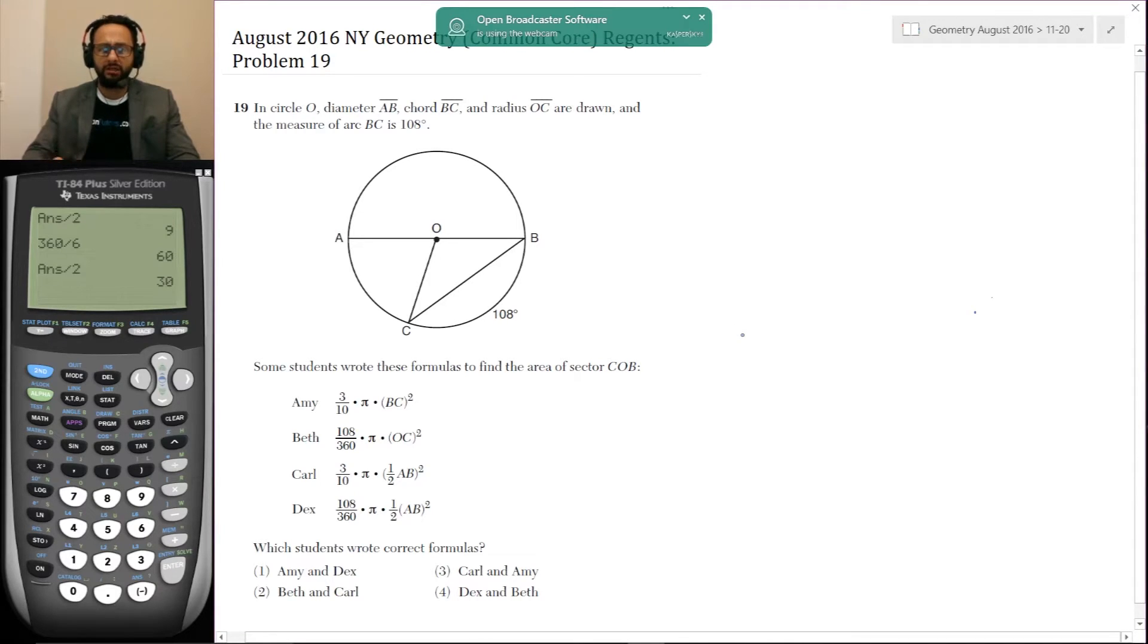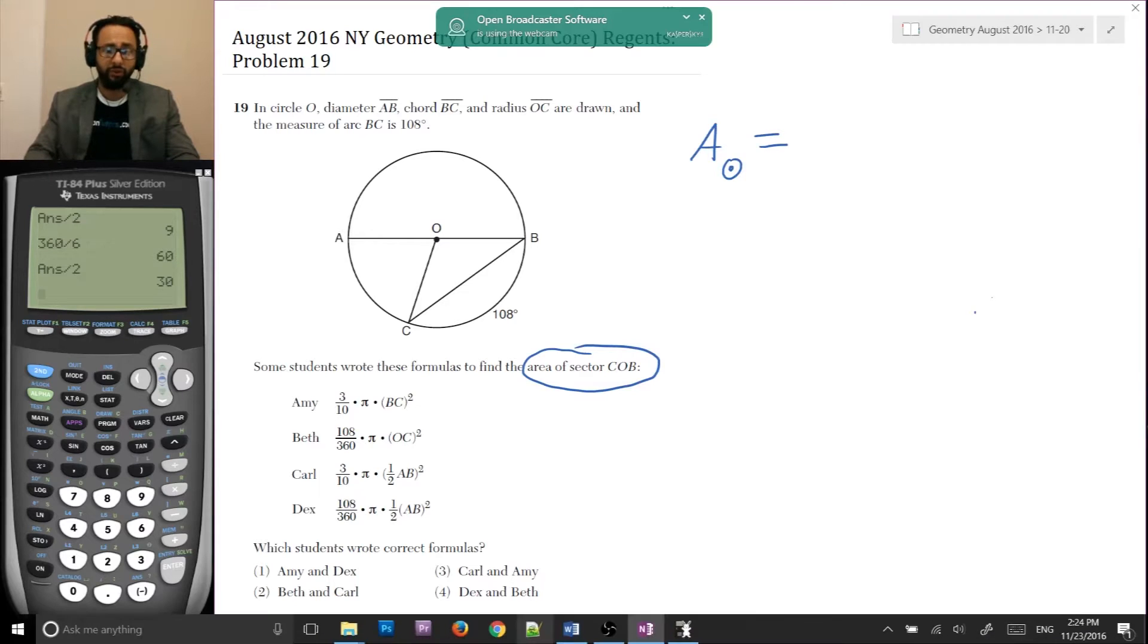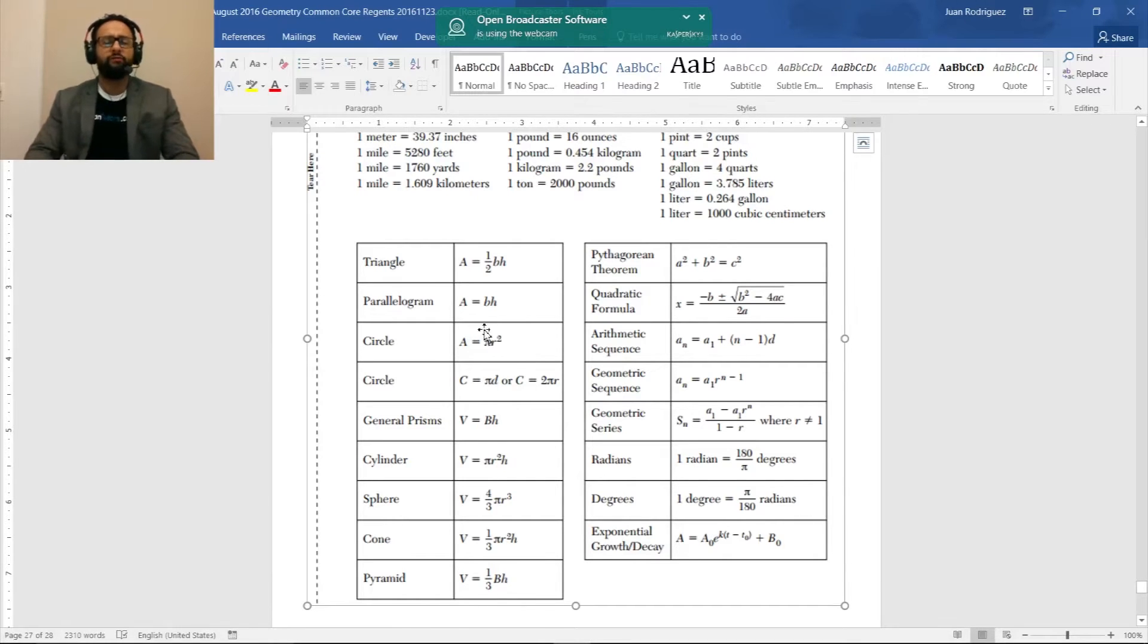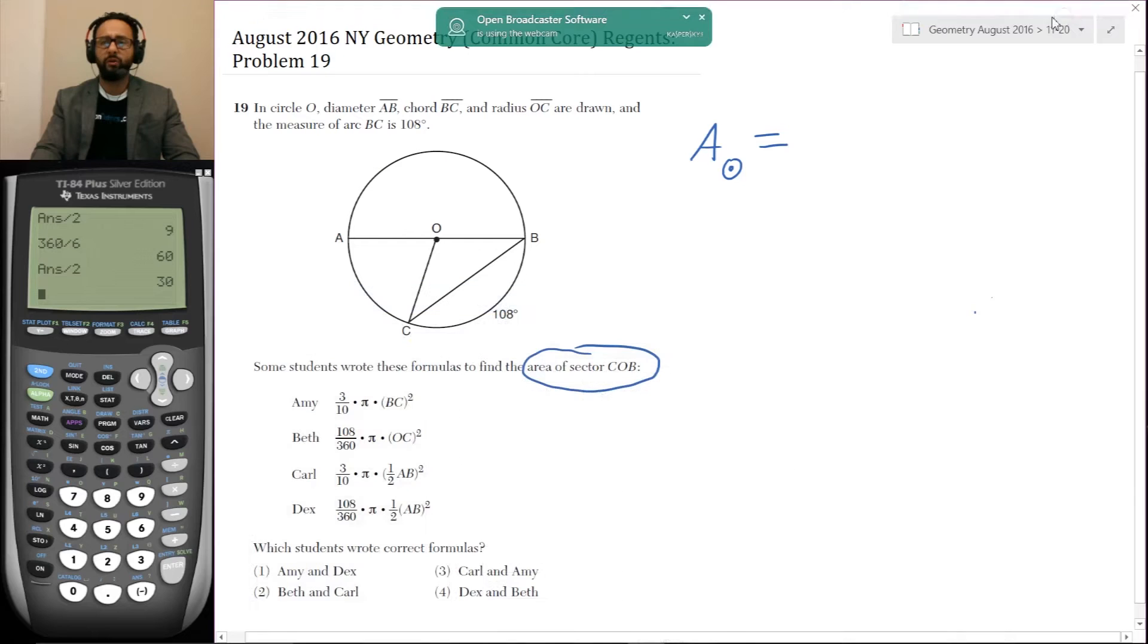In this problem, we do need to know what we're being asked for. We're finding the area of sector COB. We need to know what the area of a circle is. Now, if you don't remember the area of a circle, you really should know it, but you can go to the formula sheet. In fact it is here, the area of a circle is pi r squared. So even though I recommend highly that you know that formula, it's given to you.